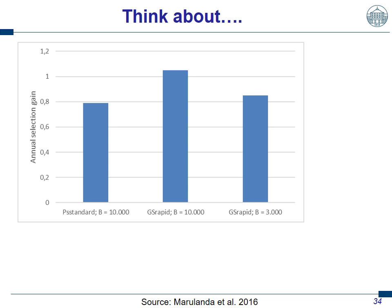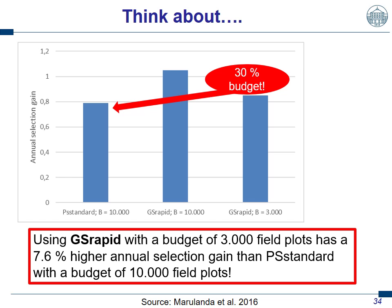To put this in even stronger context: here you have the annual selection gain. The phenotypic standard scheme assuming a big budget of half a million euros gives 0.8 annual selection gain. When we use the same budget for the GS rapid scheme, we get 35% higher selection gain — this we know already. But using the GS scheme with only a third of the budget, we are still better than the phenotypic standard. That means 30% of the budget is used and we still achieve a 7.6% higher annual selection gain than in the phenotypic standard scheme.